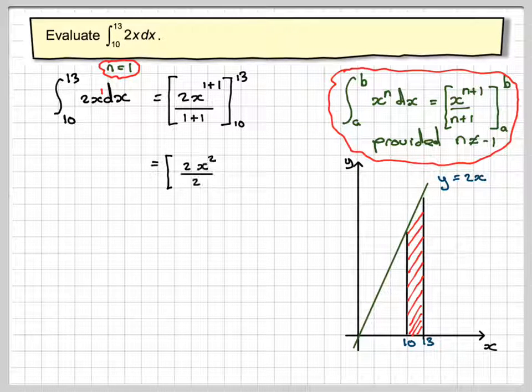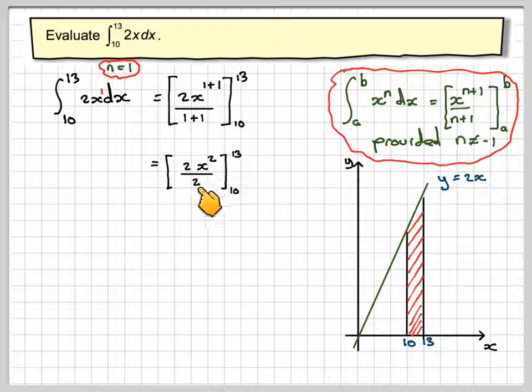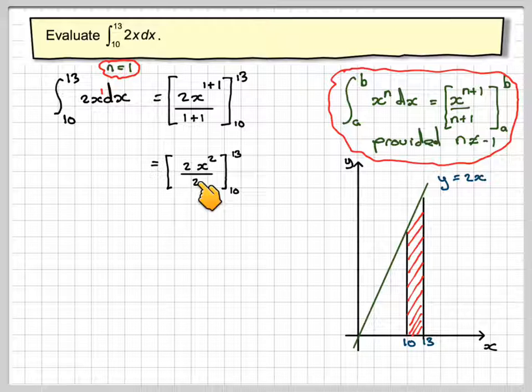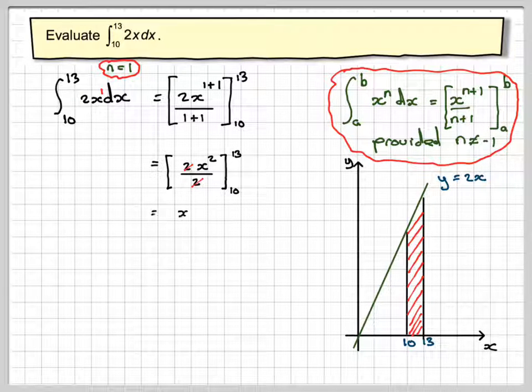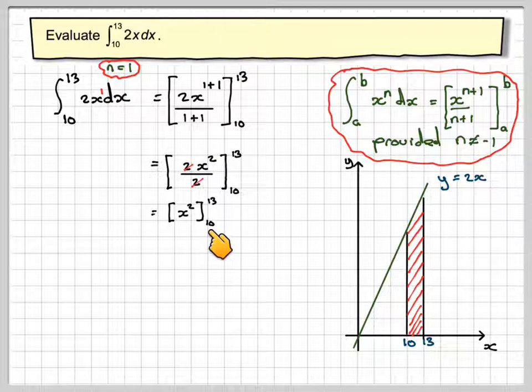So this is now going to be equal to 2x squared divided by 2, from 10 to 13. Notice that the 2's cancel out. And we now get this left with x squared from 10 to 13.